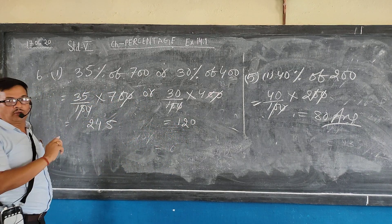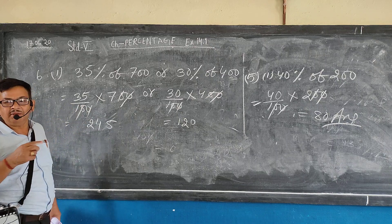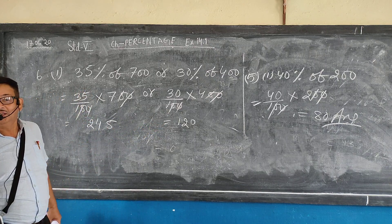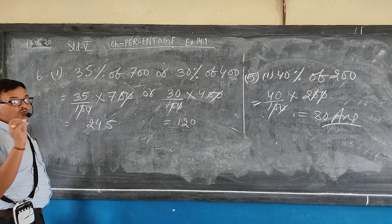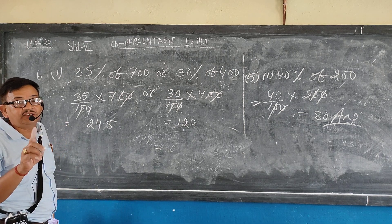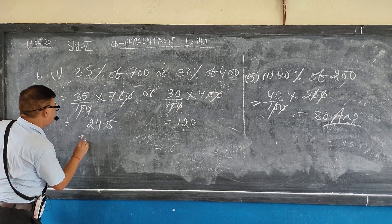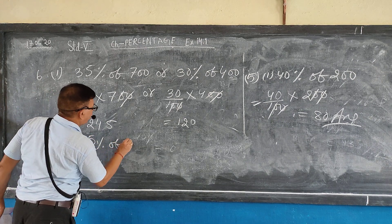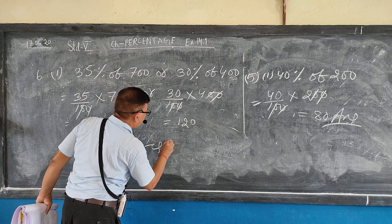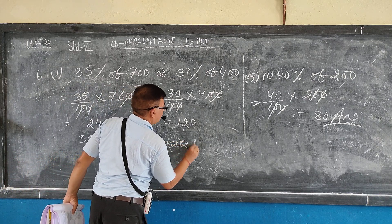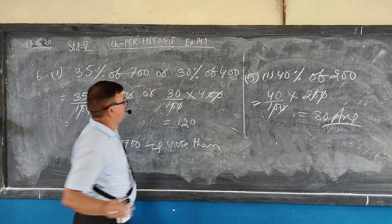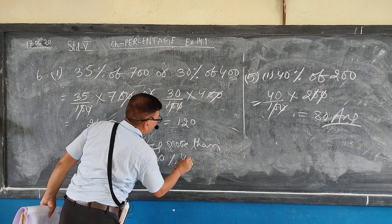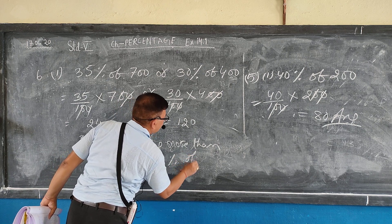Which is more? 245 is greater than 120. So the answer is: 35 percent of 700 is more than 30 percent of 400.